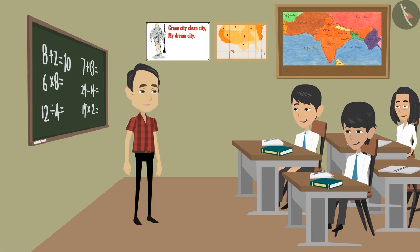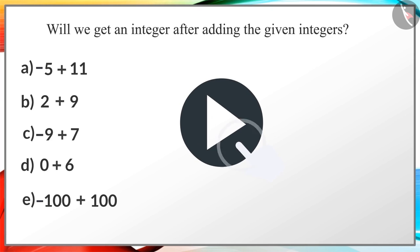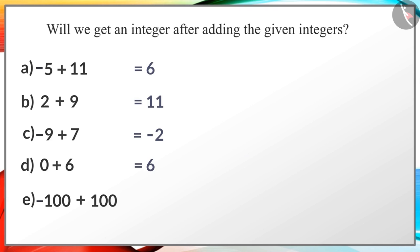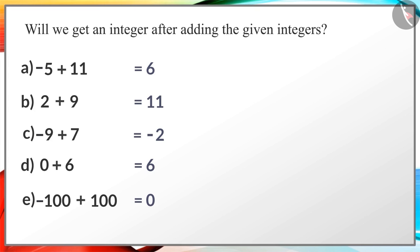Children, now add these integers and see, will we get an integer after adding them? You can pause the video and try. Children, what can we say about the closure property of integers? Sir, integers are closed under addition because every time we add two integers we will get another integer. Well done, Mohan.